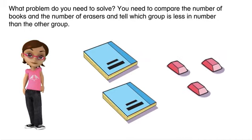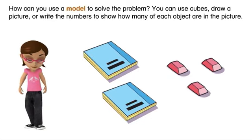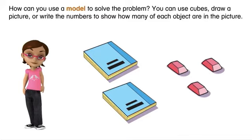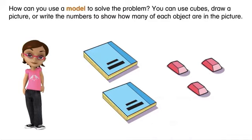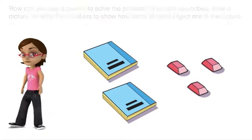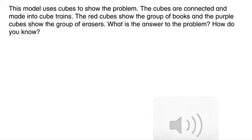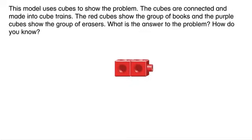How can you use a model to solve the problem? You can use cubes, draw a picture, or write the numbers to show how many of each object are in the picture. This model uses cubes to show the problem. The cubes are connected and made into cube trains. The red cubes show the group of books.